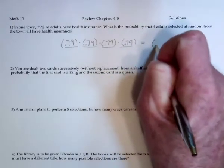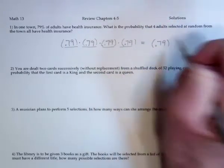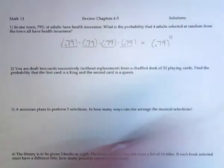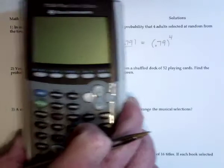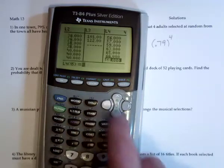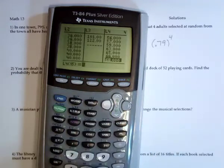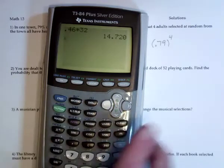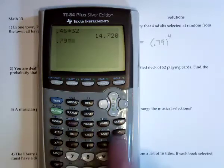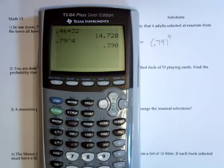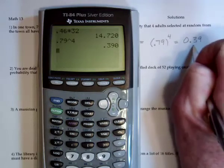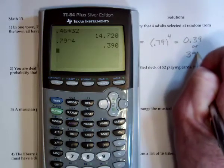Or another way to do it is say the chances of having health insurance for one person is 0.79, and then do that four times in a row. So we would have 0.79 raised to the fourth, which is 39%. You can either leave the decimal, 0.39, or say that's 39%.